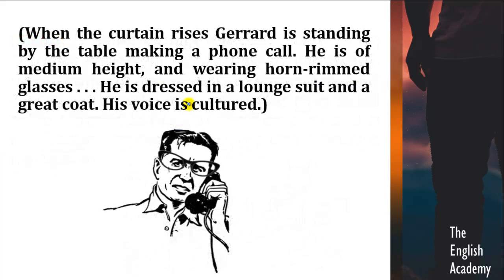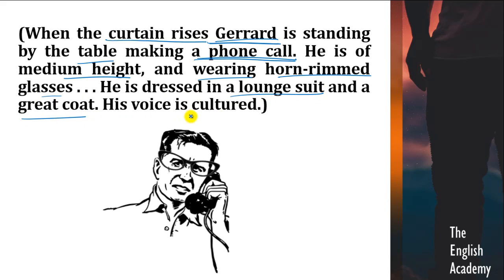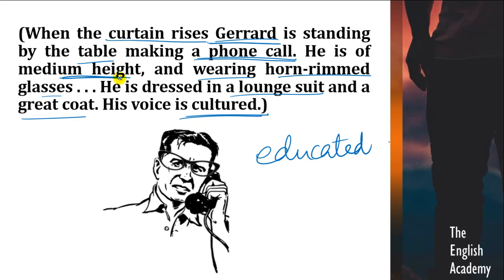Now let us move ahead. When the curtain rises — jab parda hatega, tab kya scene aara hoga — Gerard is standing by the table making a phone call. Gerard, who is one of the two characters in this play, woh phone par baat kar raha hai. He is of medium height and wearing horn-rimmed glasses. He is dressed in a lounge suit and a great coat. His voice is cultured, meaning educated and refined. So yahaan per humhe Gerard ki description pata chal rahi hai.